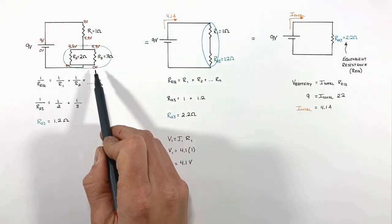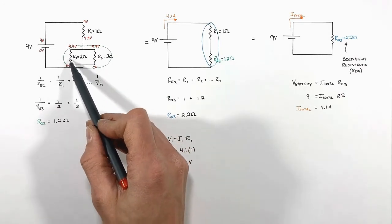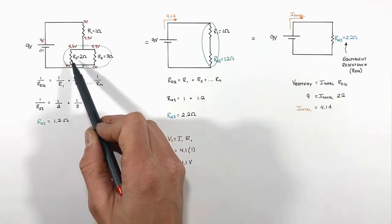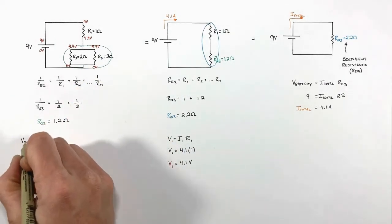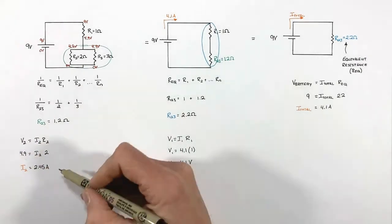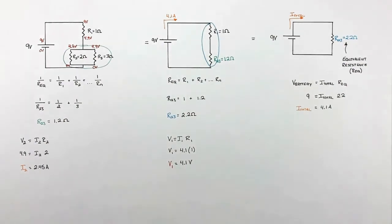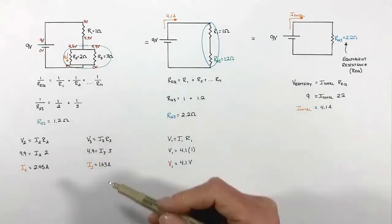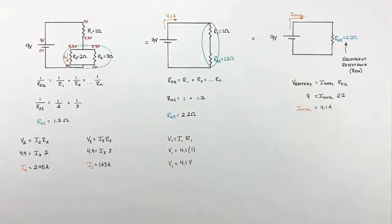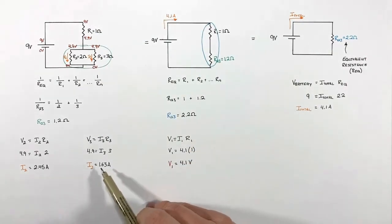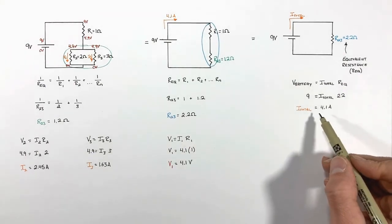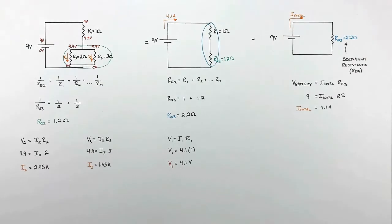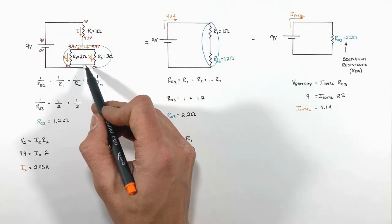There is 4.9 volts of potential across each of these parallel resistors. Applying Ohm's law to the 2 ohm resistor, we find the current through it is 2.45 amps. Applying Ohm's law to the 3 ohm resistor, we find the current through it is 1.63 amps. The sum of these two currents equals the total current in the circuit — at the junction, some current goes one way and some goes the other, but after passing through each resistor the currents recombine into a single wire.